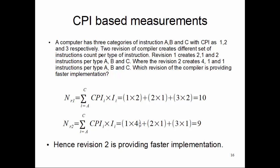For revision 2, CPI for group A is 1 and we have 4 instructions, CPI for group B is 2 and we have 1 instruction, and CPI for group C is 3 and we have 1 instruction. We multiply them and sum it up—it becomes 9. So the number of cycles for revision 2 is 9, which is less than the number of cycles computed for revision 1, which is 10. Hence revision 2 provides the faster implementation.